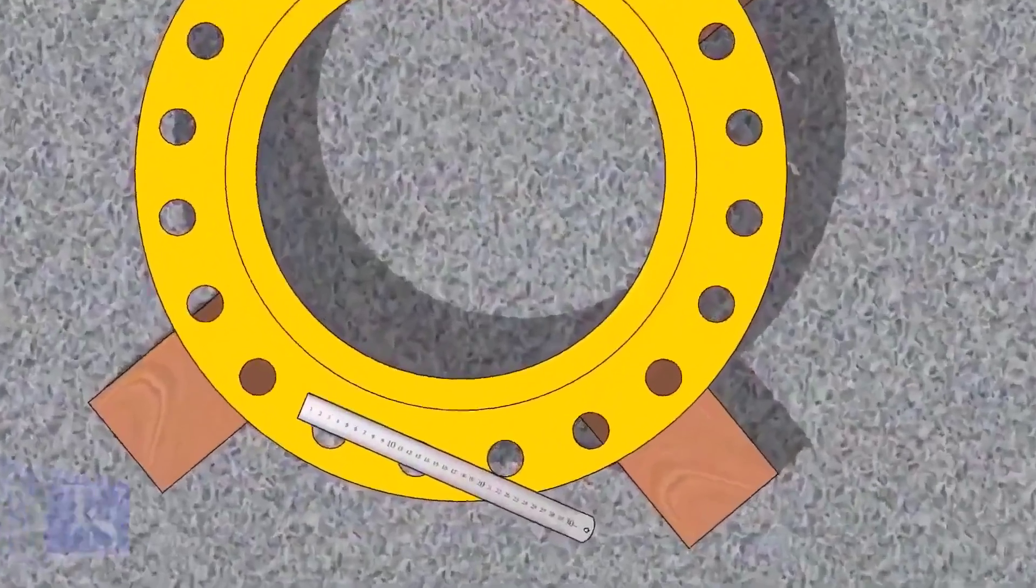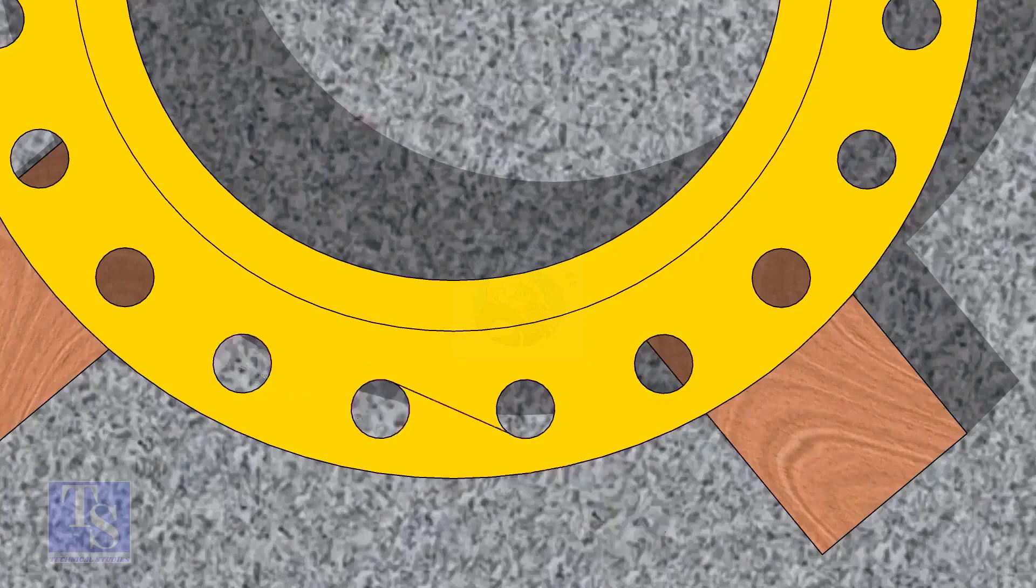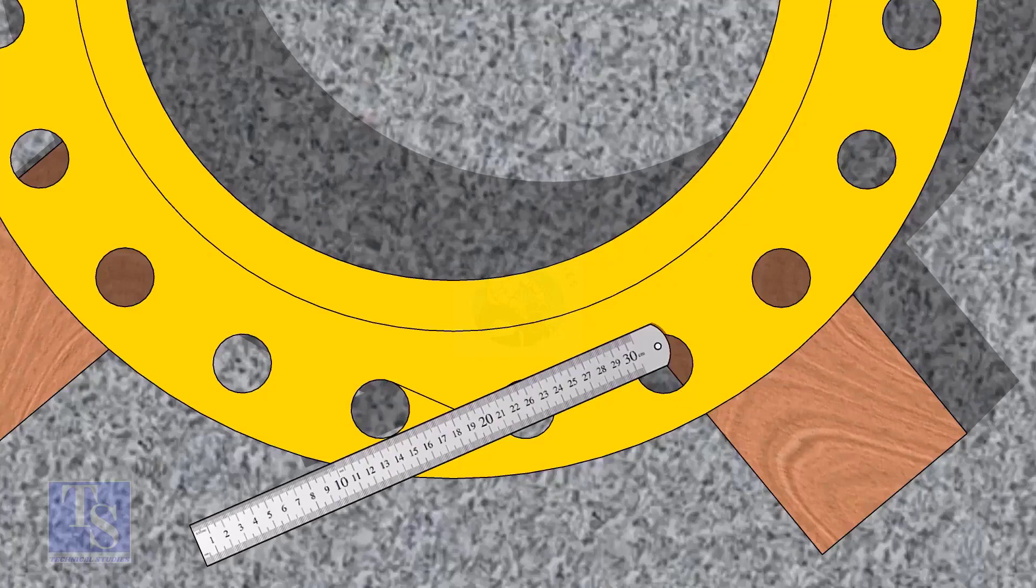Let us mark the center line of the flange. Draw tangential lines of two adjacent holes. The intersection of the lines is the center of these holes.